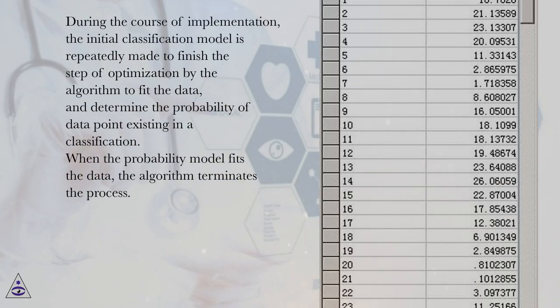During the course of implementation, the initial classification model is repeatedly made to finish the step of optimization by the algorithm to fit the data, and determine the probability of data point existing in a classification. When the probability model fits the data, the algorithm terminates the process.